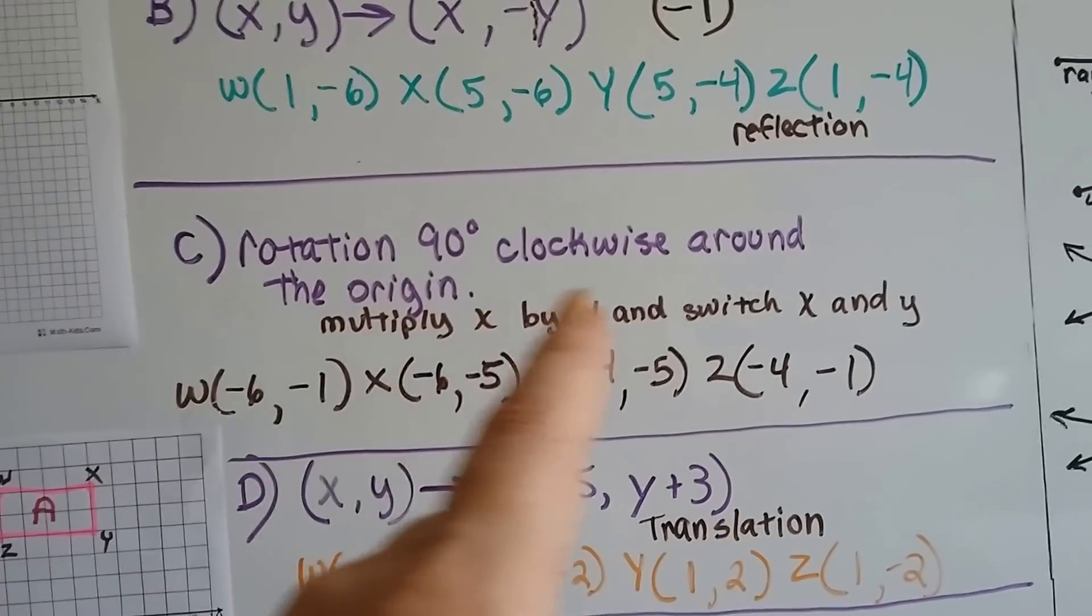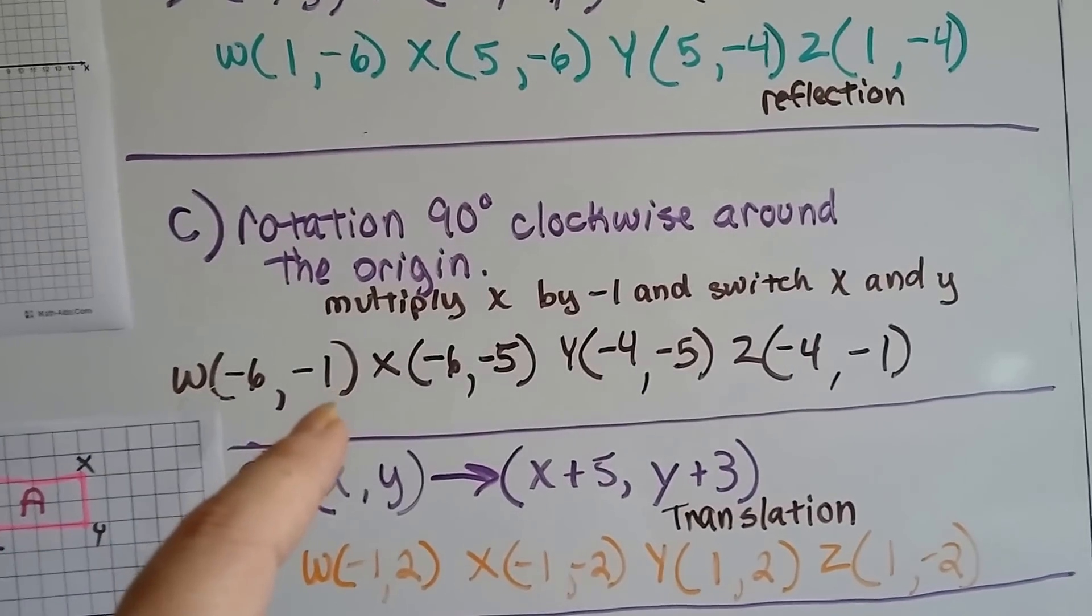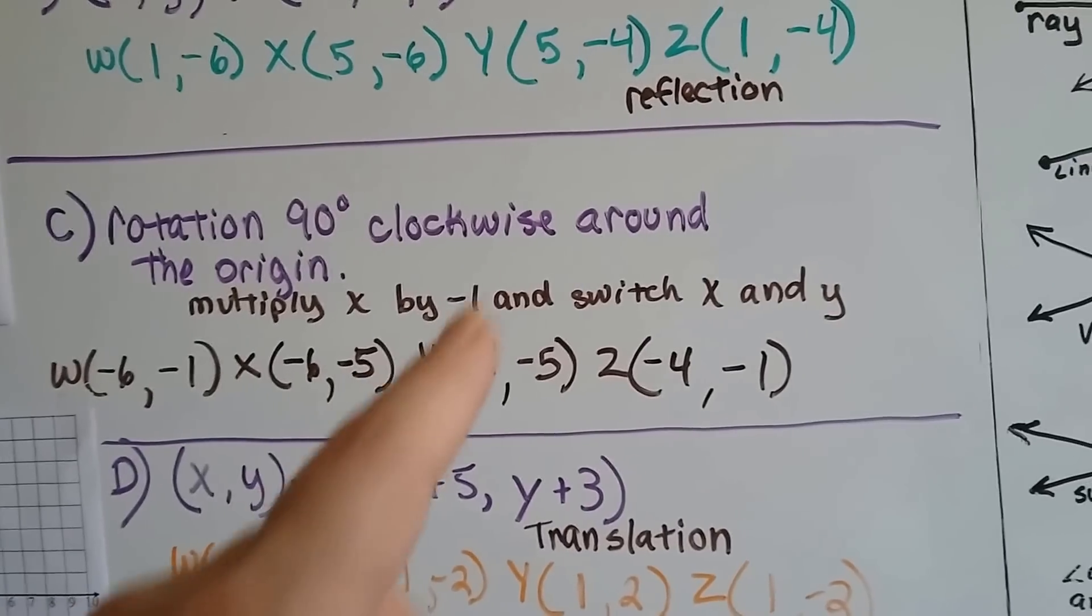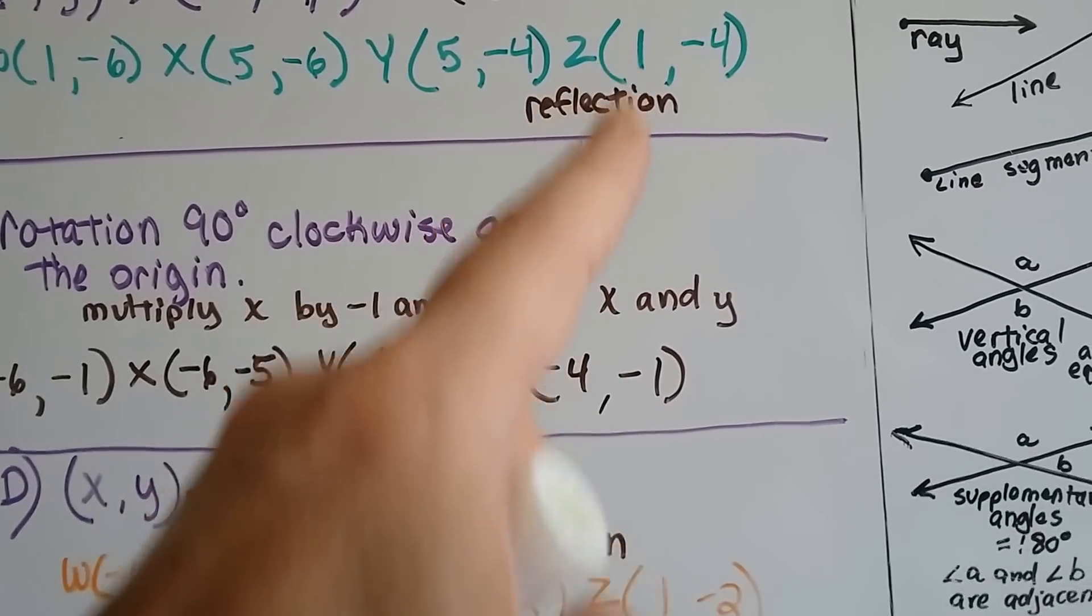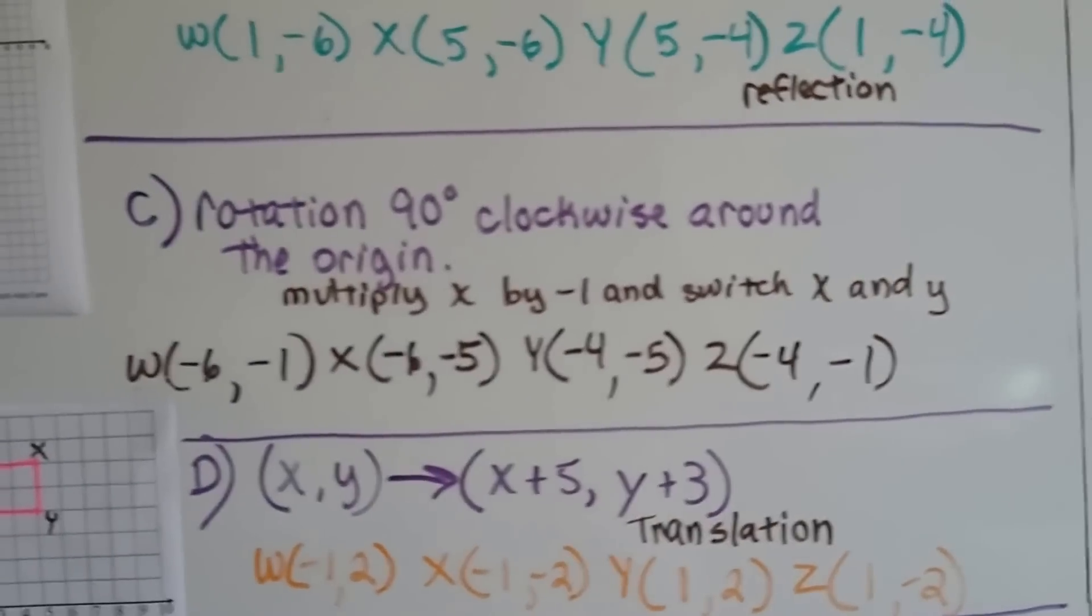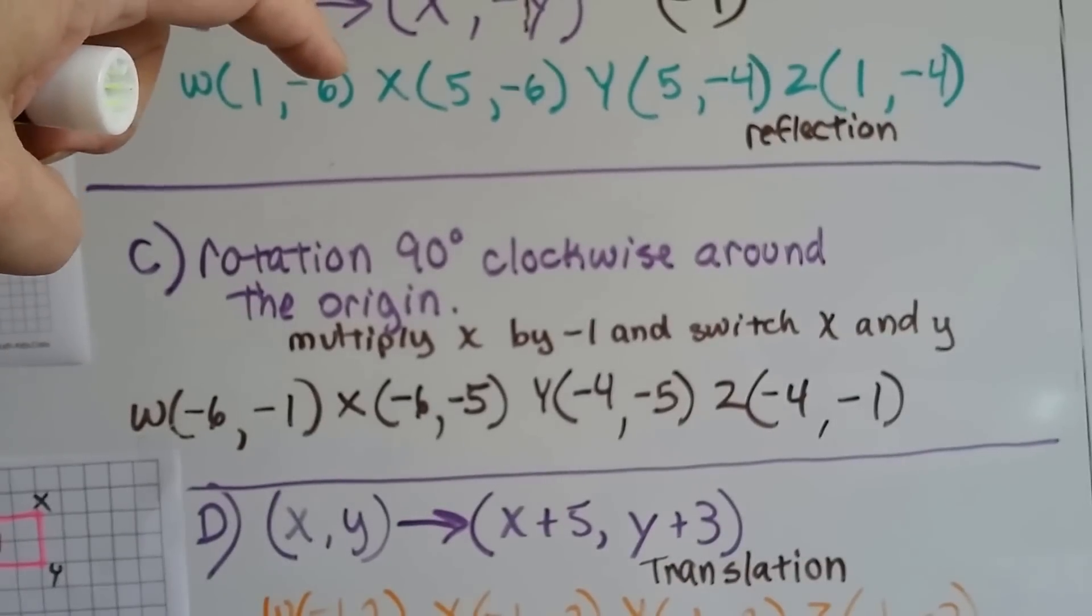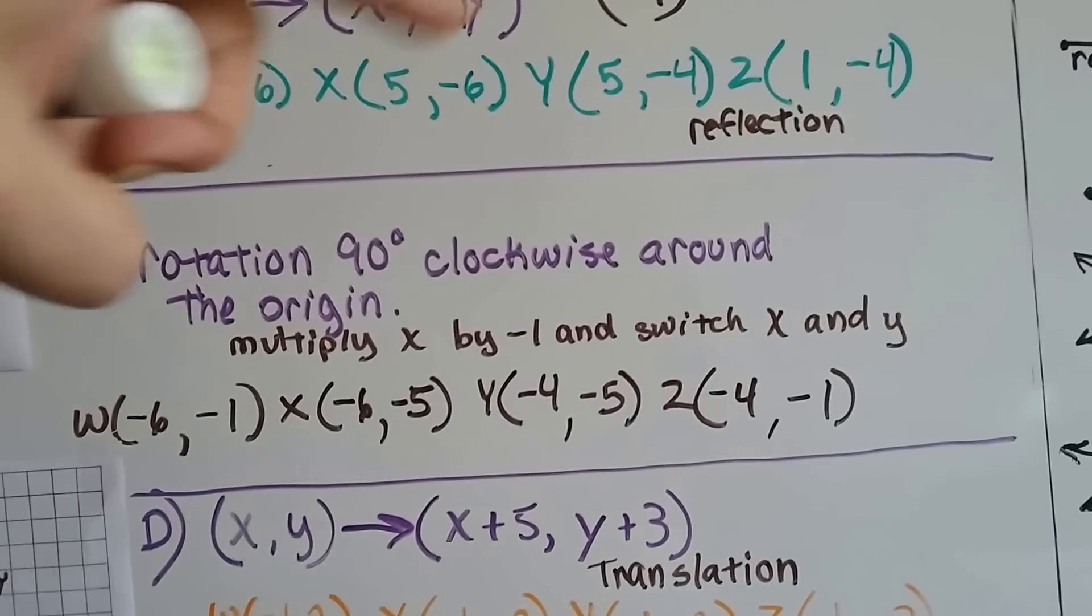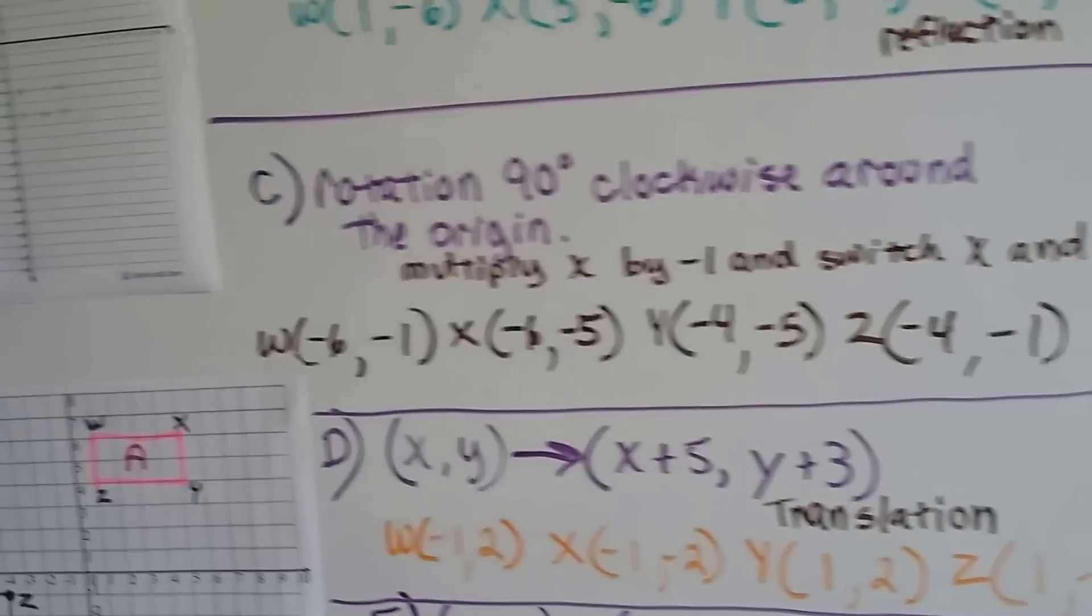So now all the negative 1s that we multiplied, 1 times negative 1, it's now in the y's place. 5 times negative 1 is negative 5 in the y's place. 5 times negative 1 is negative 5 in the y's place. And the 1x is now negative 1 in the y's place, because we switched x and y. And then we just drop down whatever the old y values were from the green one into the new x place. So we've got negative 6, negative 6, negative 4, and negative 4, because they switched.